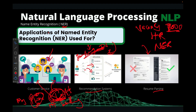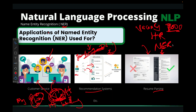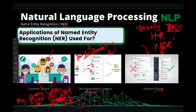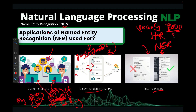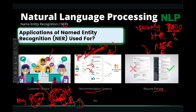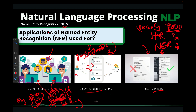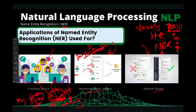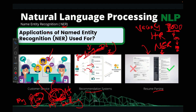So they use name entity recognition to scan resumes and identify if you have keywords that relate to the job description. This allows them to narrow down 30,000 applicants to maybe 100, and then further to the top 10 candidates. Then HR will use human intuition to select the best from those 10 people.